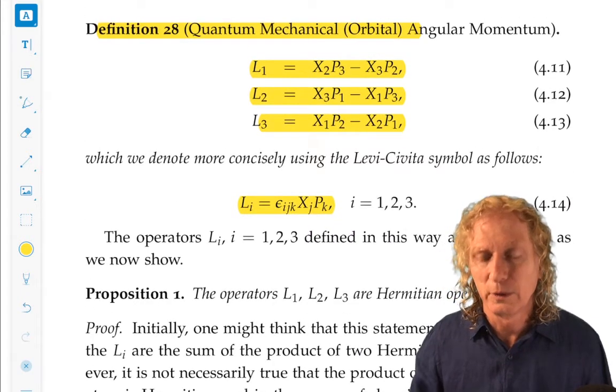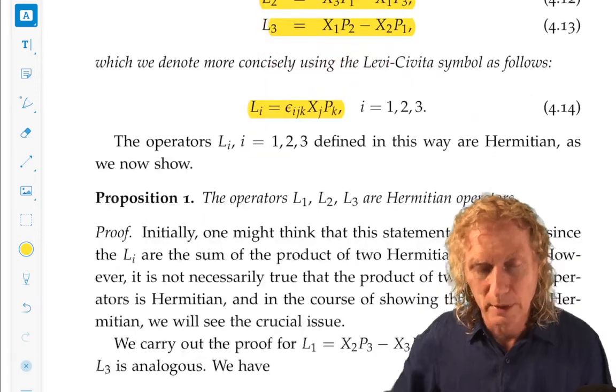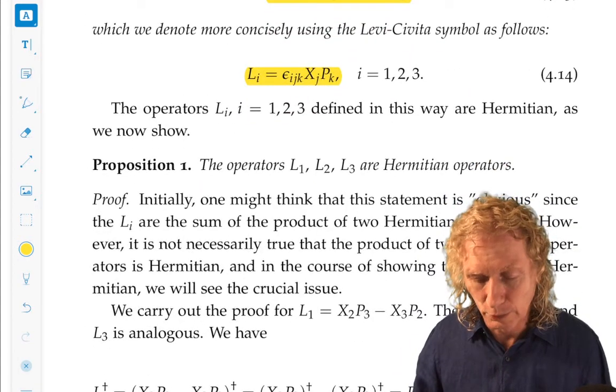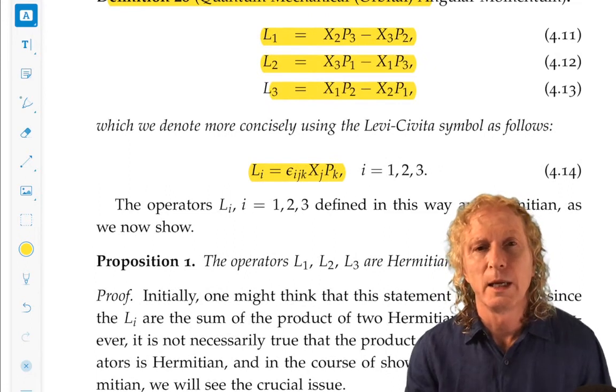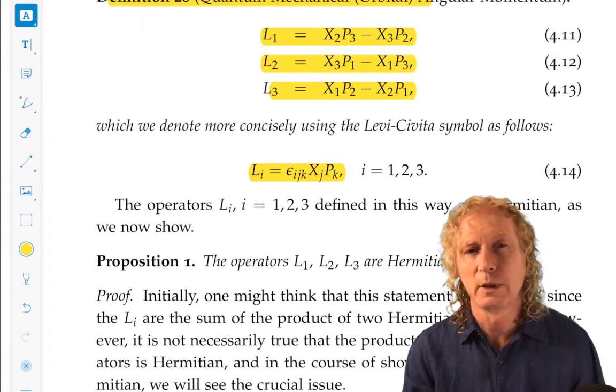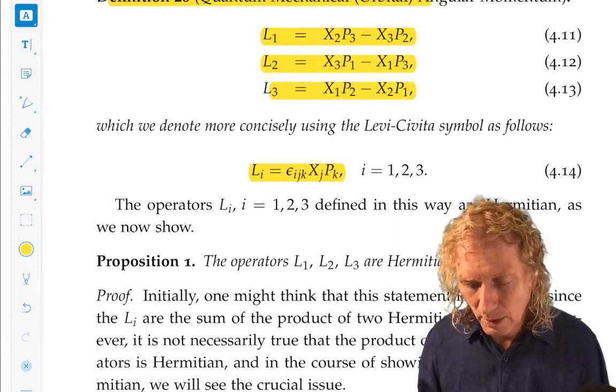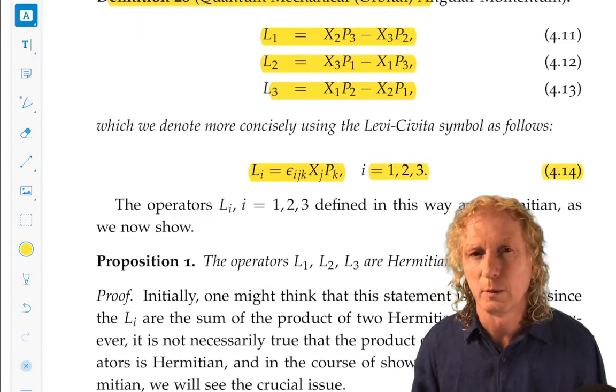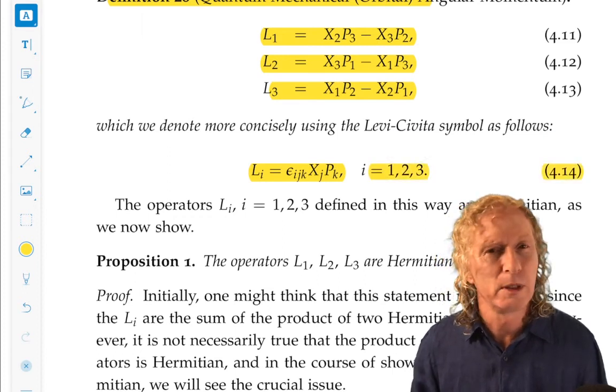Now, all sorts of interesting things we need to do. We need to show that these are Hermitian or self-adjoint. And we'll do that next. And we need to look at commutation relations. And if you stare at this, you can see that the commutation relations for this are going to be interesting.